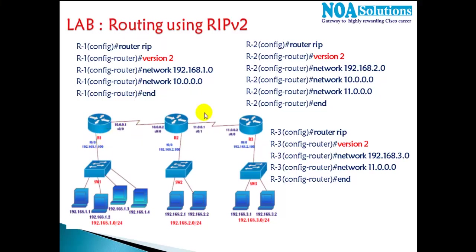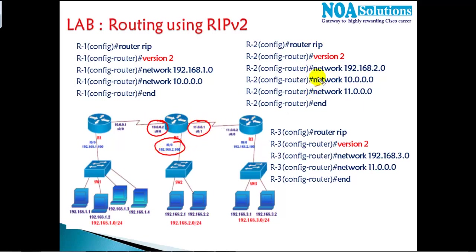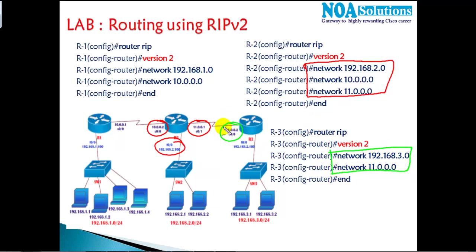Similarly on Router 2, we need to do the same thing — advertise directly connected interfaces. On Router 2, I have a 10.network, an 11.network, and 192.168.2.network. On Router 3, advertise your own directly connected interfaces: 11.network and 192.168.3.network. Just advertise your own directly connected interfaces using RIP protocol.